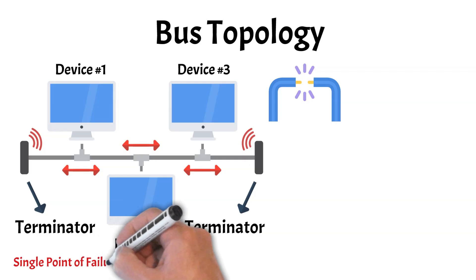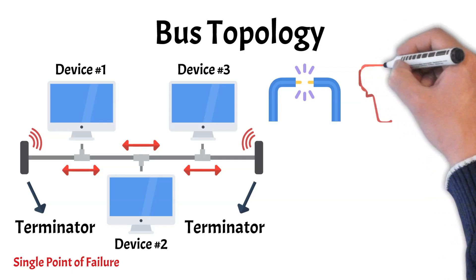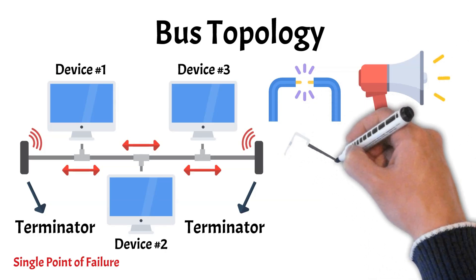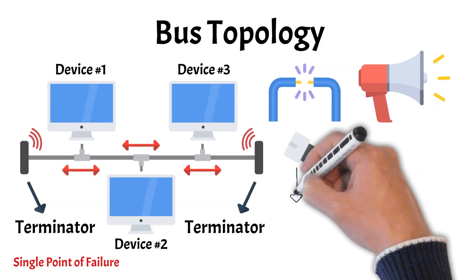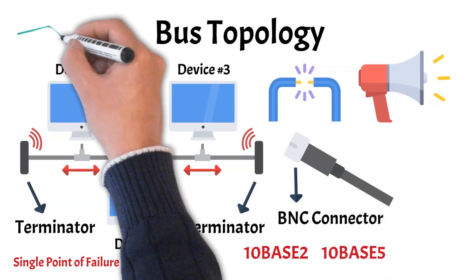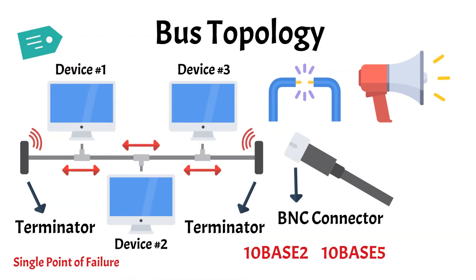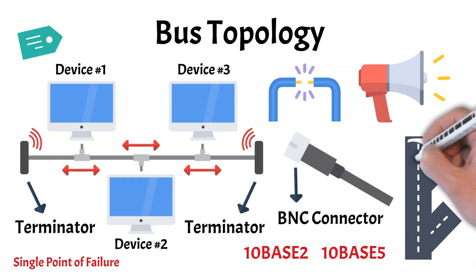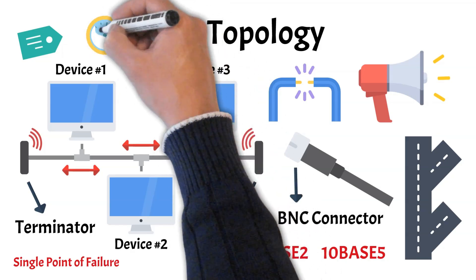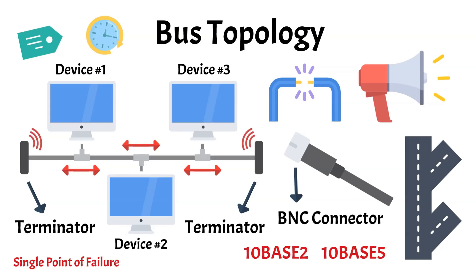This is known as a single point of failure. All devices on the bus are in the same broadcast domain, which means every device hears every message, even if it's not meant for them — like shouting down a hallway where everyone can listen in. Historically, bus topologies were common in early Ethernet networks, especially with coaxial cables such as 10Base2 and 10Base5. They were popular because they were simple and cheap to set up, but as networks grew larger, the limitations became obvious: collisions, poor scalability, and low reliability. That's why modern networks have largely moved away from the bus design, replacing it with more efficient and reliable topologies.